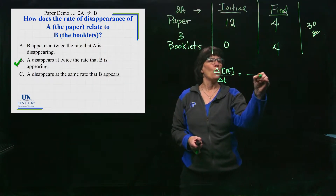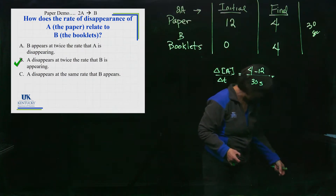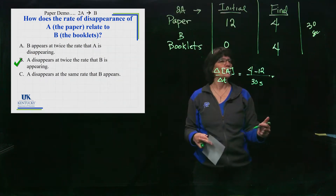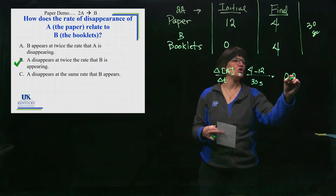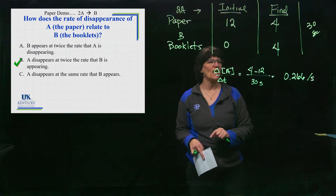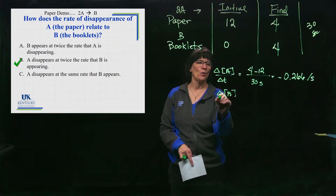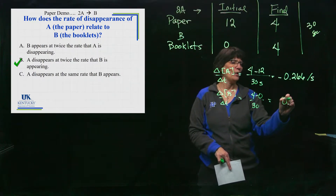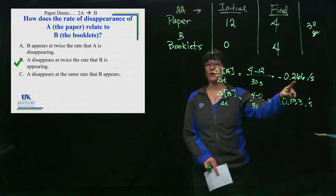Let's make measurements. The change in A with respect to time is (4 − 12) / 30 seconds, which gives −0.266 per second — a negative value because it's a small number minus a large number. The change in B with respect to time is (4 − 0) / 30 seconds, giving +0.133 per second. So numerically, A is disappearing twice as fast as B is appearing.